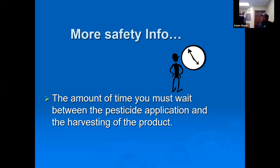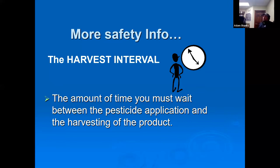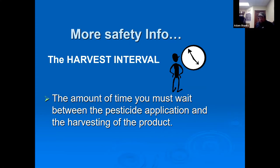The harvest interval is the amount of time you must wait before harvesting fruit or vegetables from a treated area. You don't want to contaminate anything you're going to eat or sell. If you need to harvest in the next 30 days and the harvest interval is 45 days, you should look at a different product.